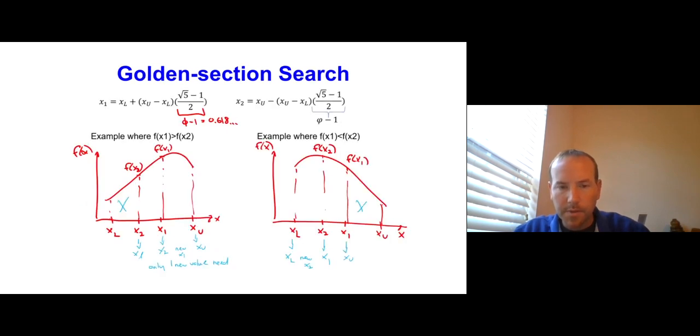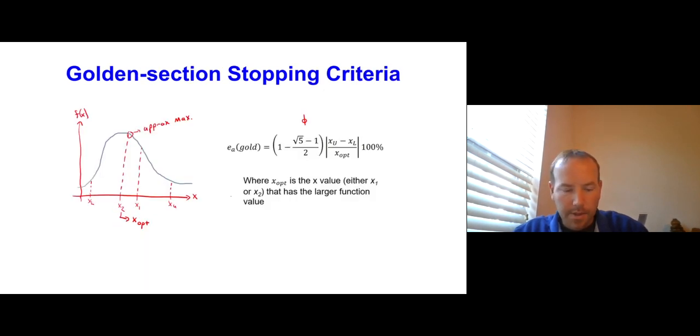In golden section search, we're going to be repeating this process one after the other. We gradually narrow in on the maximum of the function. We need some way to stop. That is given by the golden section stopping criteria. This is just a special formula that's similar to just approximate error. But by tradition, we use this version of it when we're using the golden section search.